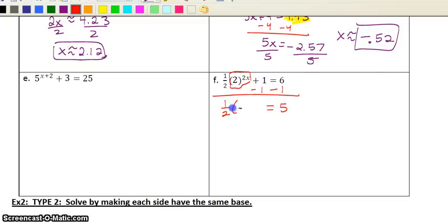I have 1 half times 2 to the 2x power equals 5. Then I want to get rid of the 1 half. So multiply both sides by the reciprocal. It cancels out this part. This part stays 2 to the 2x power. 5 times 2 is 10. Now I have the base and the exponent all by itself, ready to take the log of both sides. This time it's a base of 2.